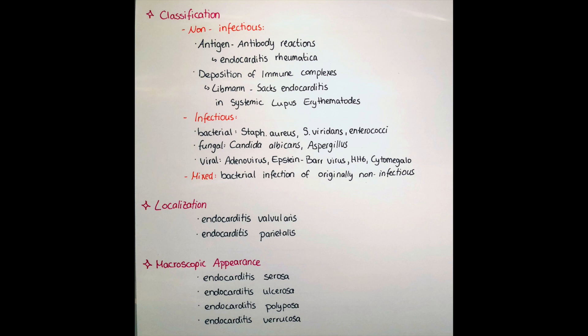Endocarditis can also be divided by its macroscopic appearance, which is primarily relevant for pathology. We differentiate four types: endocarditis serosa, with a reddish shiny swelling of the valves; endocarditis ulcerosa, with inflammation and ulcerations; endocarditis polyposa, with a mix of polyps and ulcerations; and endocarditis verrucosa, with wart-like vegetations on the edges of the valves.